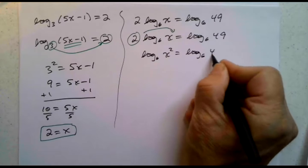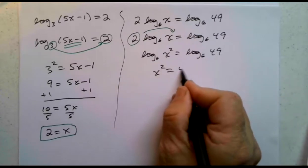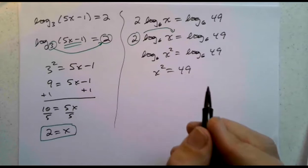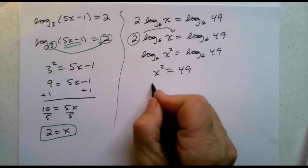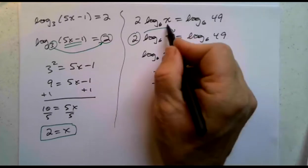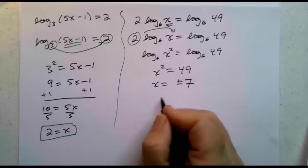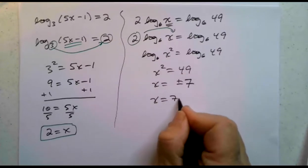So I'm going to get log base 6 of x squared equals log base 6 of 49. So if that's the case, essentially x squared would be 49, but you've got to be a little bit careful. We're going to have to check when we're finished. If x squared is 49, x is plus or minus 7. Except, of course, you cannot take a log of a negative number, so the negative answer is no good. So the only one I would have here is 7.